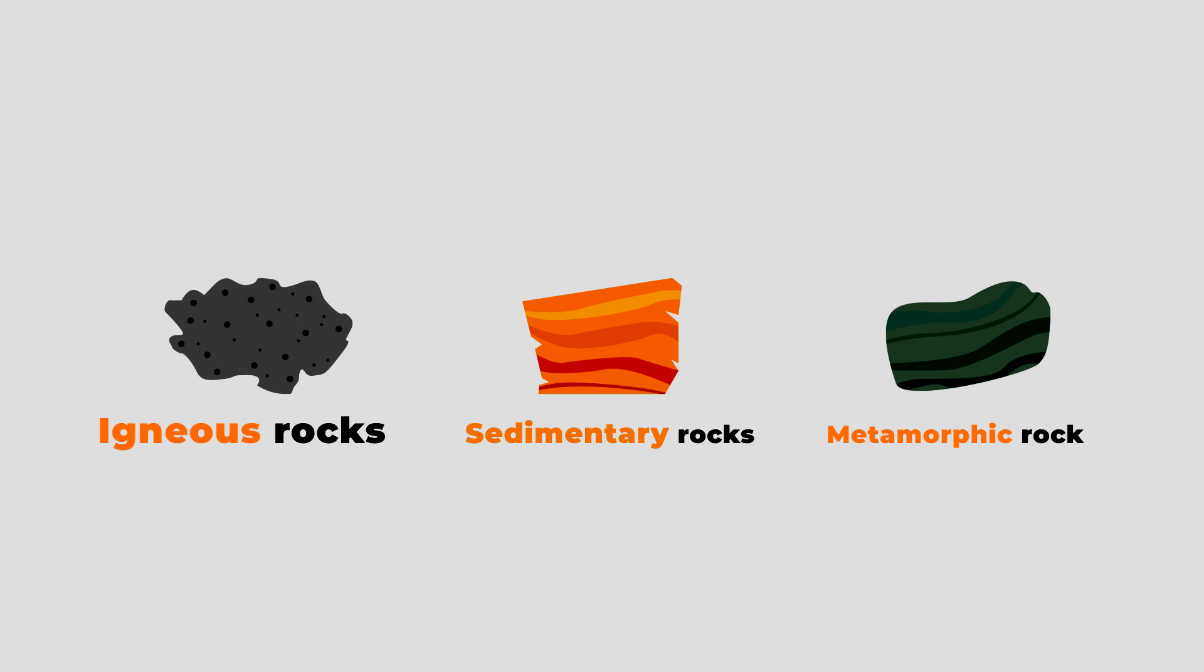Plate tectonics constantly uplift these igneous rocks to the surface. These tiny fragments get eroded, deposited, and buried, and the pressure from above compacts them into sedimentary rocks such as sandstone. If sedimentary rocks get buried even deeper, they get morphed into metamorphic rocks under lots of pressure and heat.